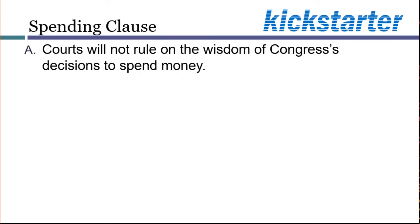This Kickstarter summarizes the spending clause principles most likely to arise for litigators in courts. At the outset, you will notice a major similarity between the taxing power and the spending power — namely, both are political decisions. If Congress wants to spend money to send astronauts to the moon or to buy everyone a cupcake on their birthday, that's a legislative decision for Congress to make.